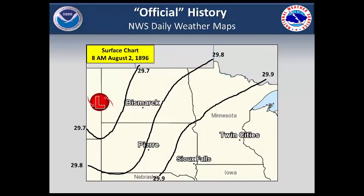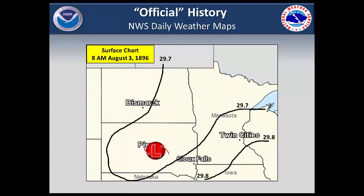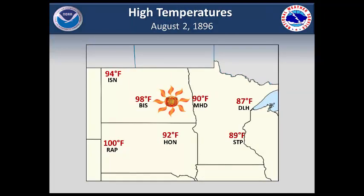Historical weather maps can be found in the daily weather map series. In 1896, this archive only contained a weather map from 8 a.m., so it is not that helpful. However, it does show low pressure along the North Dakota-Montana border the morning of August 2. By the morning of August 3, low pressure remained over the northern plains. August 2 was a hot day, with high temperatures in the 90s over the Dakotas and western Minnesota.